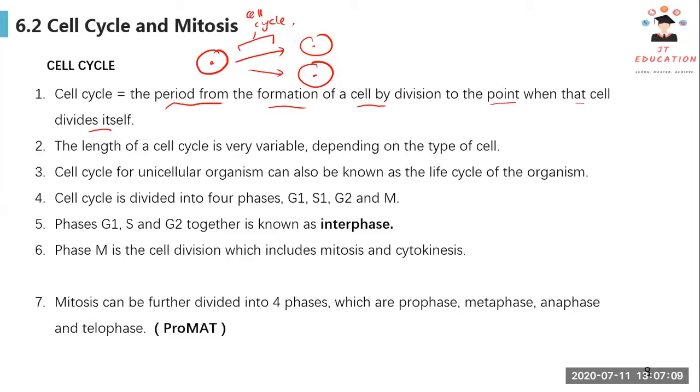If cell cycle, if cell division is cooking, cell cycle could be preparing the material to cook. The cell cycle is very variable, depending on type of cell. Some cell cycle can be one day, some can be four days, five days. It's different.